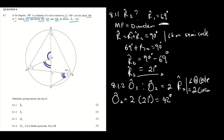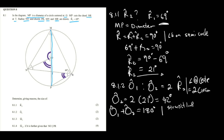Now we have angle O2, and we know that angle O1 plus angle O2 equals 180 degrees. The reason is a straight line — specifically diameter MP. Since O2 is 42 degrees, O1 equals 180 degrees minus 42 degrees, which gives us 138 degrees.